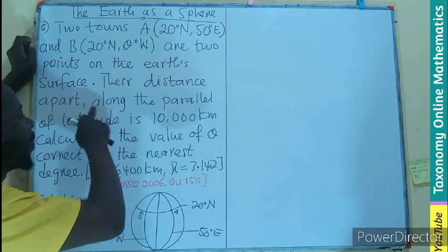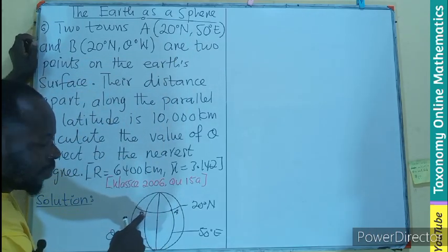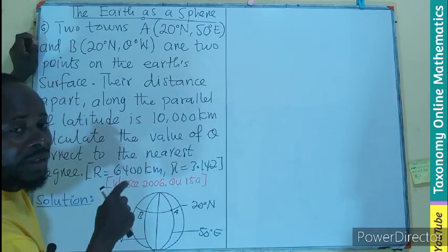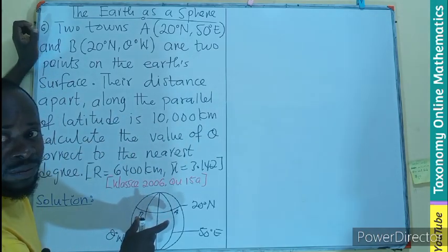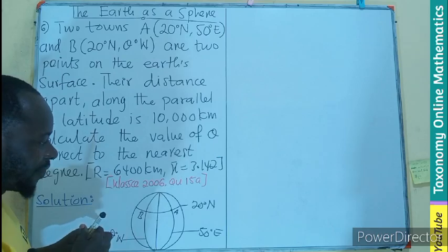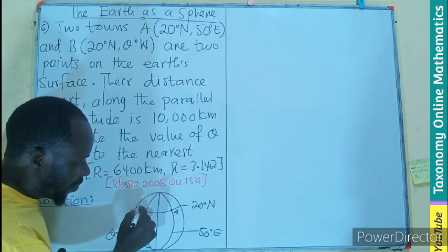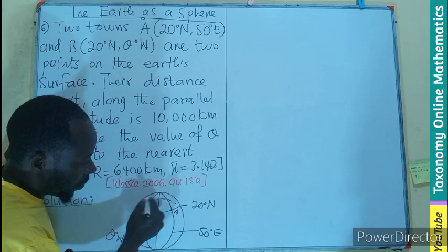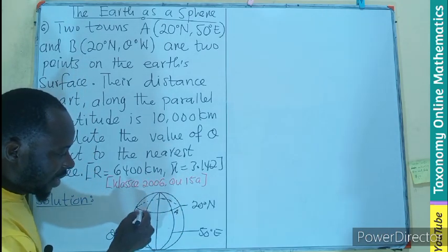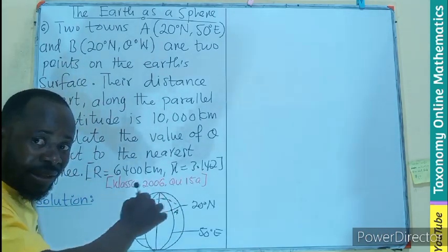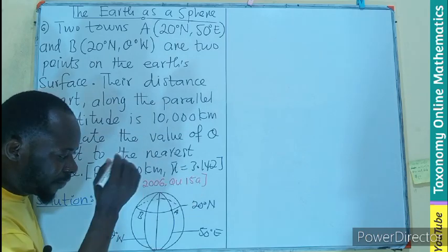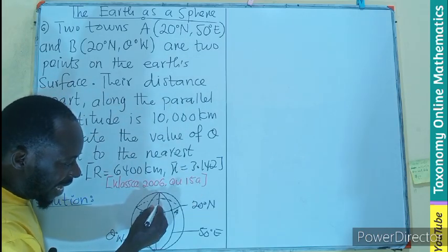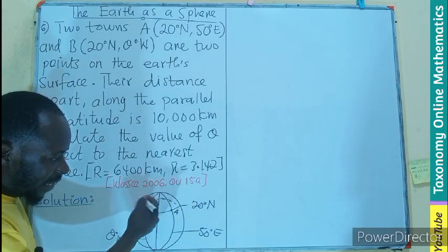Then the distance apart, meaning from A to B, is being calculated to be 10,000 kilometers. So this is the distance. Now if we are able to perfect this, we can still make it to the back. So this is the latitude surrounding it. It is forming a circle. And if it is forming a circle, then the center is going to be here.